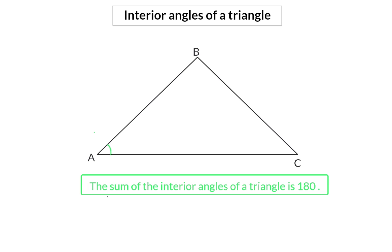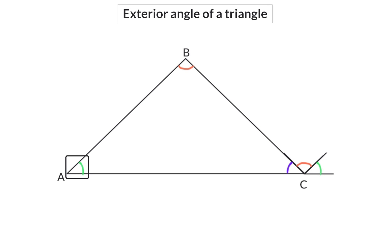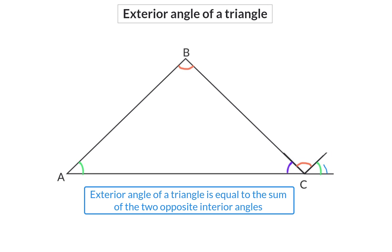In our example, we can say that angle A plus angle B plus angle C will be equal to 180 degrees. Next, we're going to have a look at the exterior angle of a triangle. Earlier, we took angle A and angle B and put them together at point C. You will see that the exterior angle of our triangle can be formed by putting together angle B and angle A. So we can say that the exterior angle of a triangle is equal to the sum of the two opposite interior angles. In our example, angle DCB, the exterior angle, is equal to the sum of angle A and angle B.